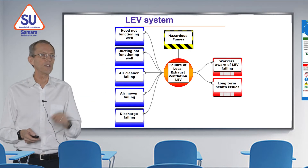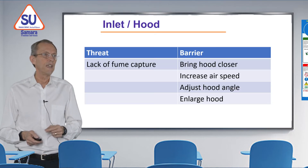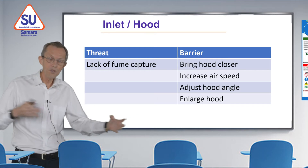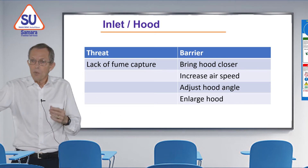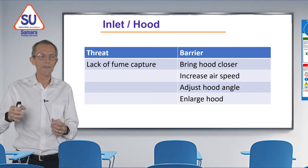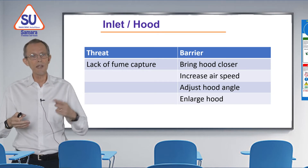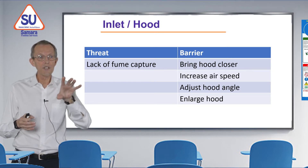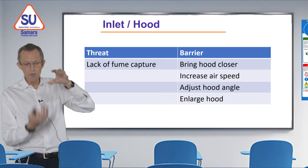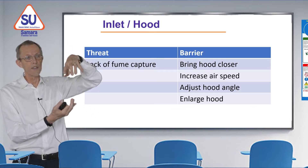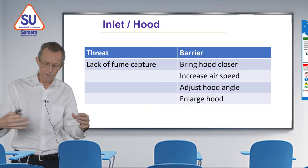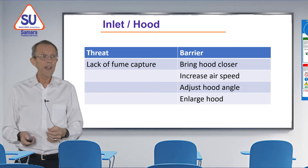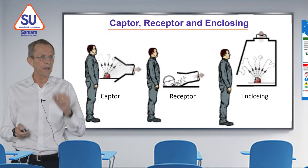Let's look at the first threat: the hood not functioning well. If we don't capture the fumes or dust properly, the fumes are available for people to breathe — we don't want that. So we could bring the hood closer. Another thing we could do is increase the air speed, sucking more air in. We could also adjust the angle of the hood so it better catches the fumes — if fumes are rising, we put the hood above; if they're produced sideways, we catch them that way. Or we could enlarge the hood. If we put that on the bow tie diagram, that will come up in a minute.